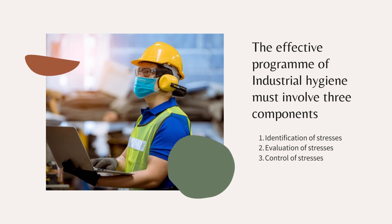Moving further, we will discuss the three main components for an effective program of industrial hygiene. The first and most important component is identification of stresses — it is very necessary to identify the stresses on workers in their environment. After identification, the stresses should be evaluated. The second component is evaluation of stresses, assessed on the basis of their intensity and their exposure to the health of workers.